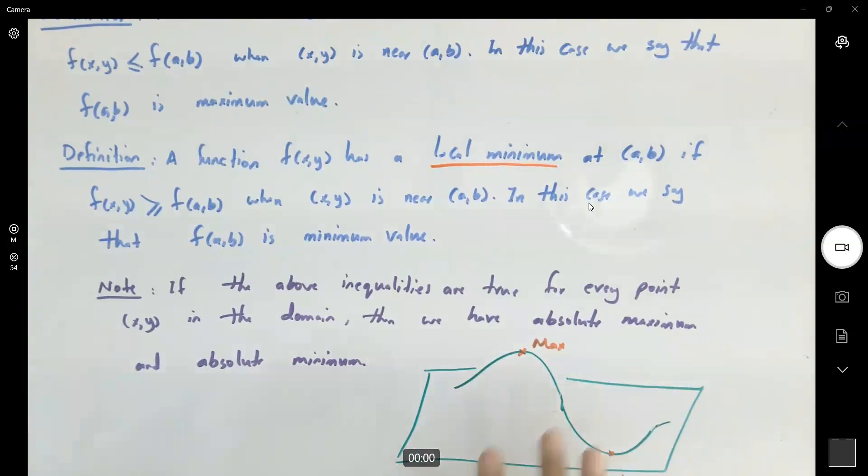So again, if it's true for all points in the domain you have an absolute minimum, absolute maximum and absolute minimum.